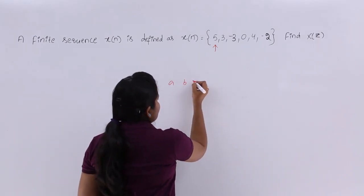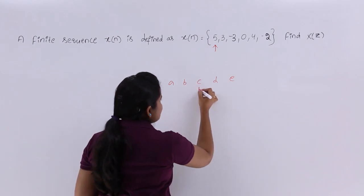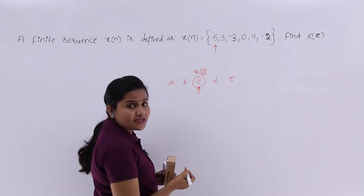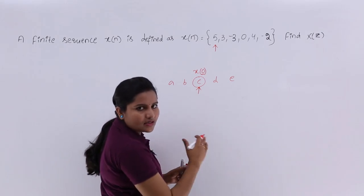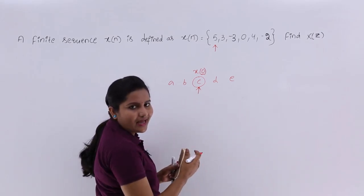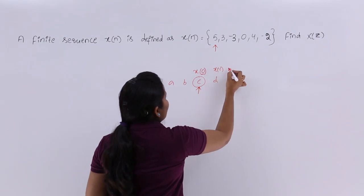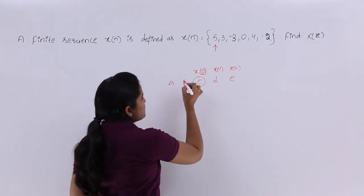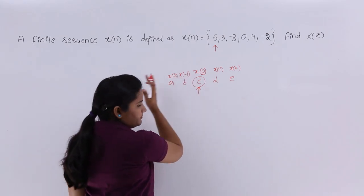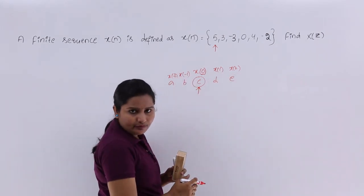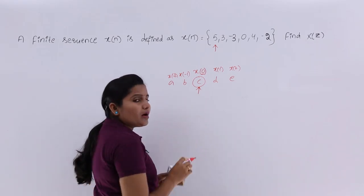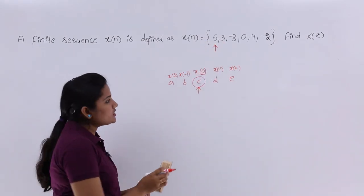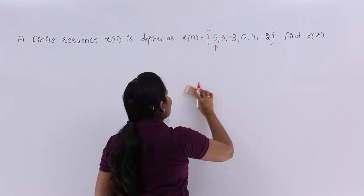For example, if they give a, b, c, d, e and mention an arrow mark at c, then c is the value of the signal at n equal to 0. The samples to the right of that fundamental sample are considered as x of 1, x of 2, and so on. The elements to the left of x of 0 are considered as x of -1, x of -2, up to x of minus infinity, and to the right up to x of plus infinity.